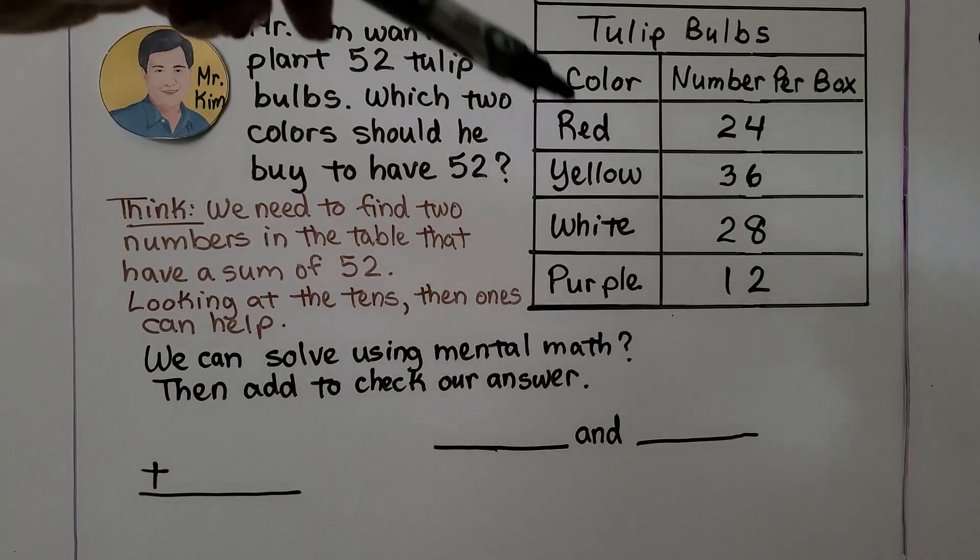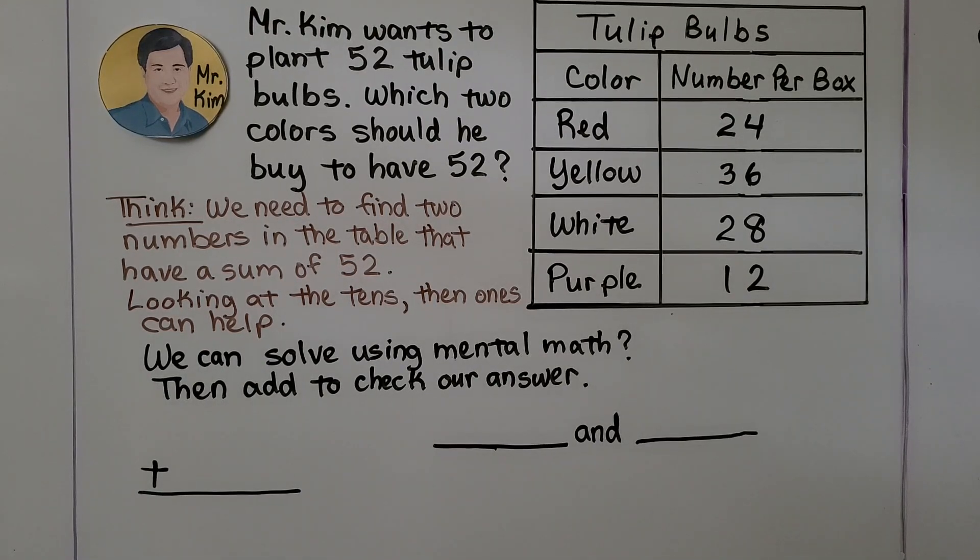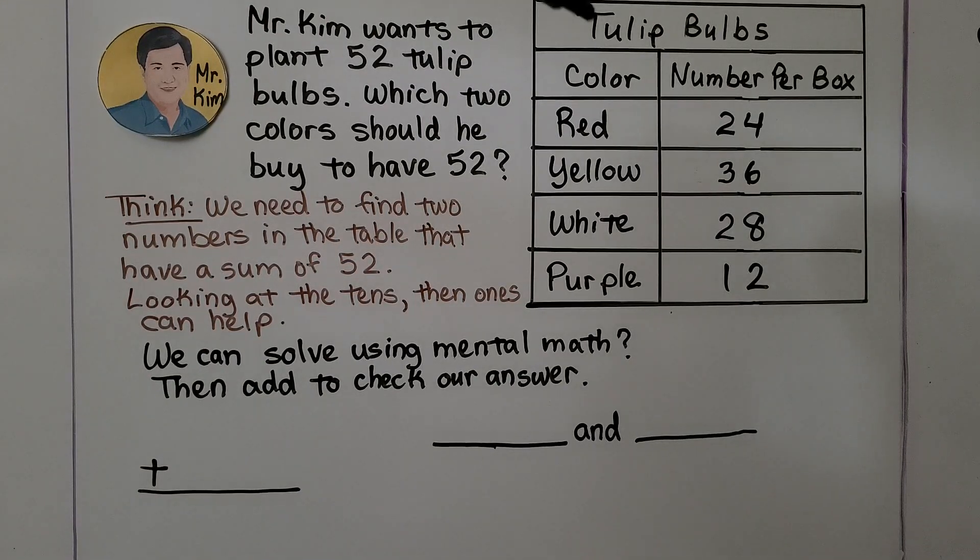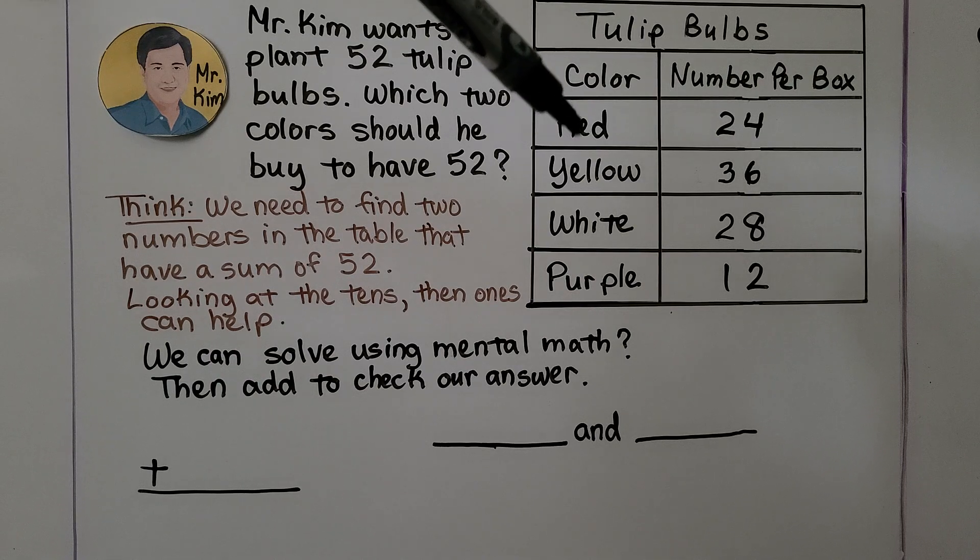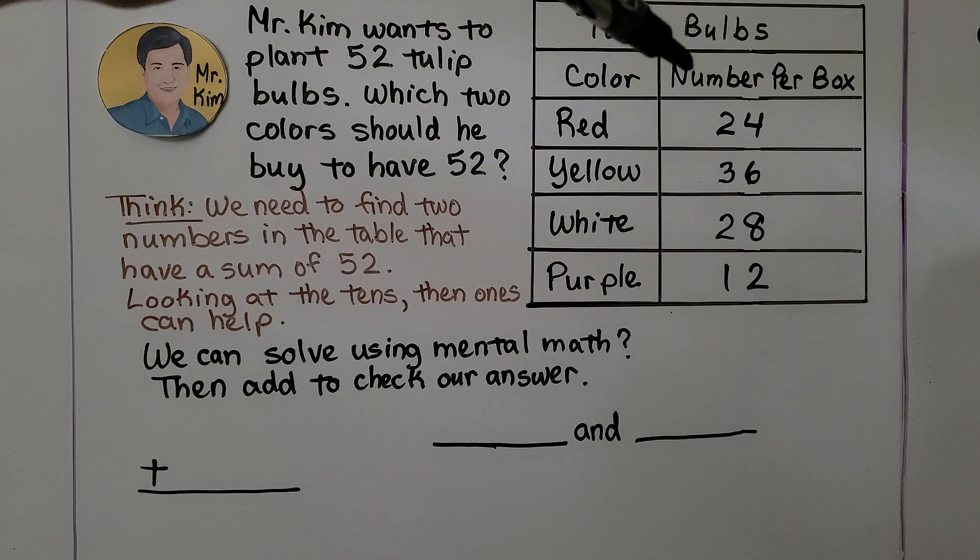Here we have a word problem that involves a chart of information. Let's look at this chart. It says Tulip Bulbs. The colors are red, yellow, white, purple, and it says number per box.